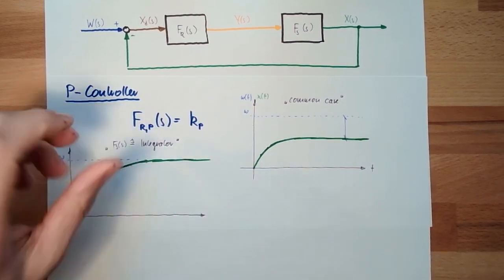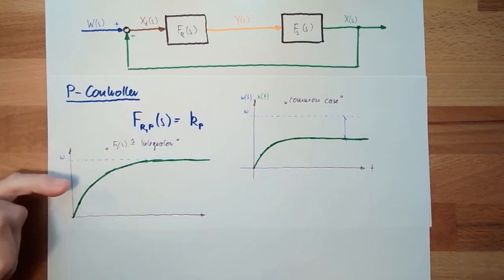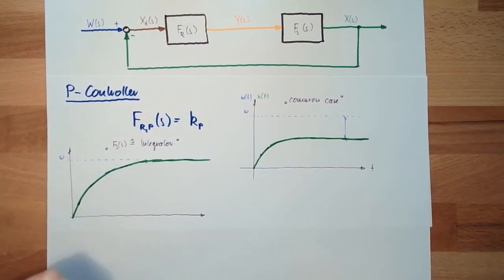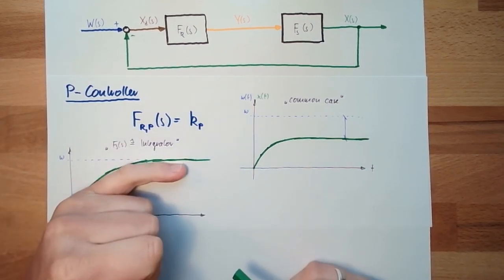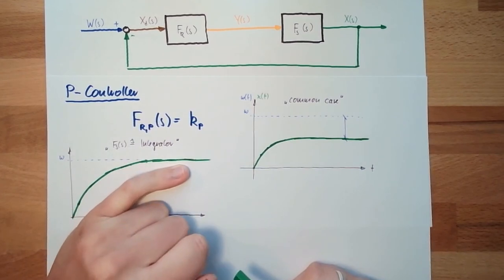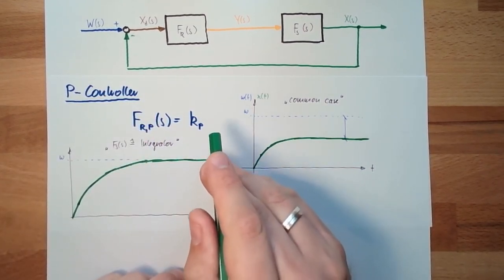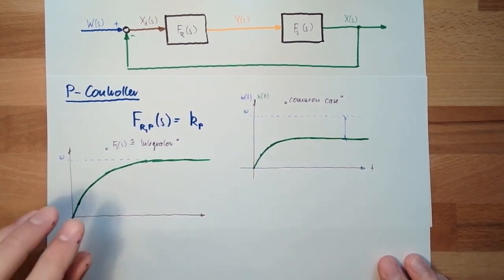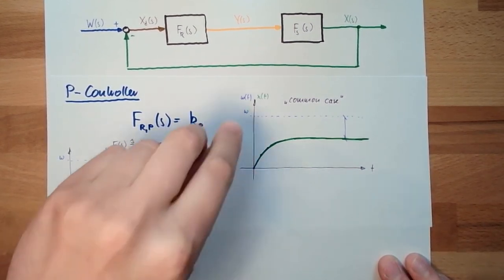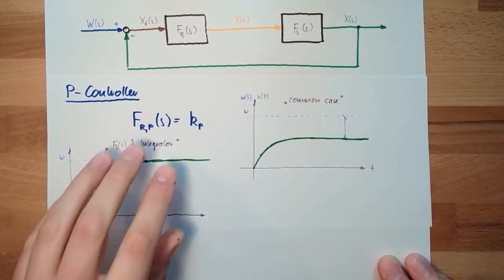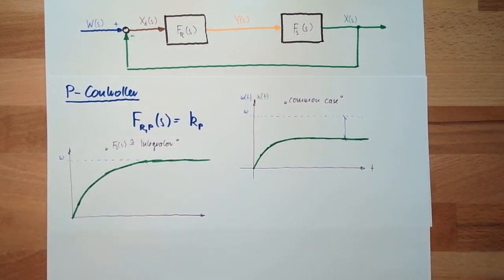Because now we're stopping the water flow, but we already reached the correct value. And if the value is going down again, if the level is going down again, we will open a little bit and water starts to drip in, and it will be filled up again. So, on special systems, a P-controller works quite fine.